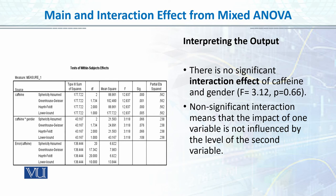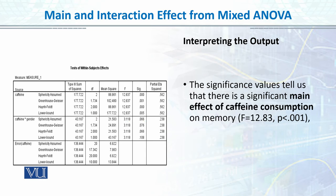There is no significant interaction effect of caffeine on gender। हम F की value report करेंगे, साथ p की value, और साथ हम लिखेंगे कि non-significant interaction means that the impact of one variable is not influenced by the level of the second variable। Interaction के लिए F-value 0.311 है — इसे round करके और इसके बाद p-value और degrees of freedom report करेंगे।